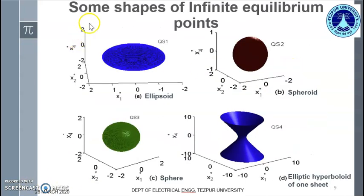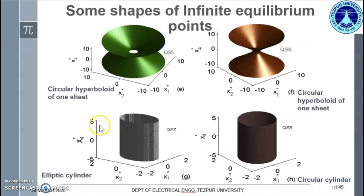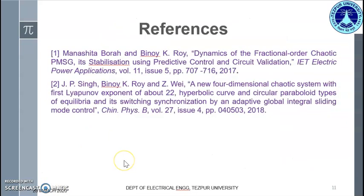Other shapes of infinite equilibrium point sets include ellipsoids, spheroids, spheres, elliptic hyperboloids of one sheet, circular hyperboloids of one sheet, elliptic cylinders, circular cylinders, and more. References 1 and 2 are the sources for the systems discussed.